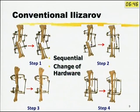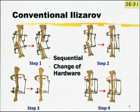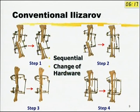With a conventional Ilizarov system, if you have all three deformities existing together — angulation, a certain amount of shortening, and a certain amount of torsion — this can be corrected by the Ilizarov system, but in multiple sequential steps. In step one you do a lengthening; in step two, on the AP X-ray, you do a correction; in step three, on the lateral X-ray, you do a correction; and in step four you do the torsional correction. This sequential correction requires a change of hardware at every step.